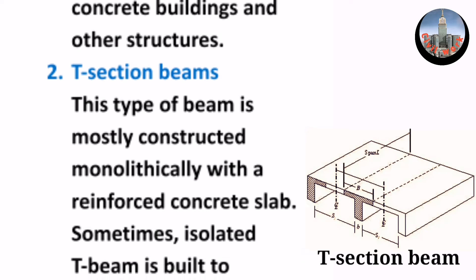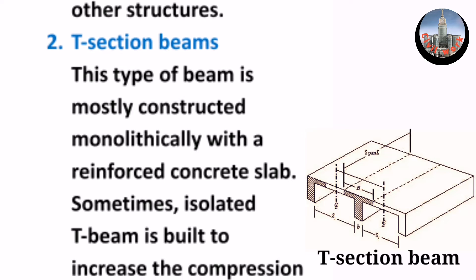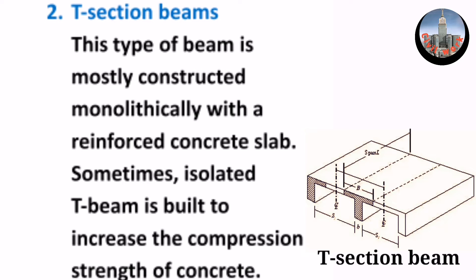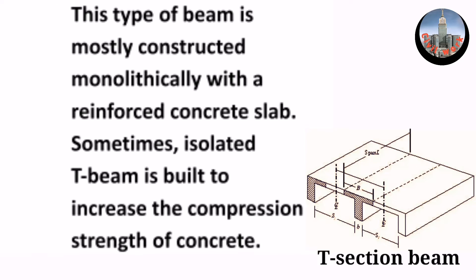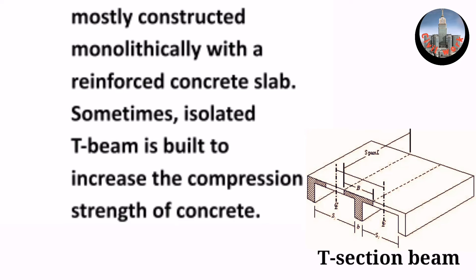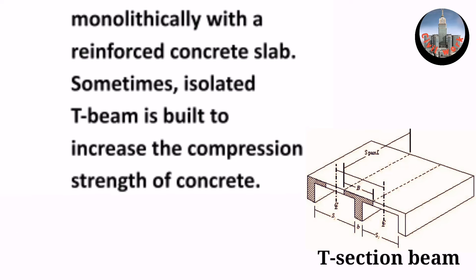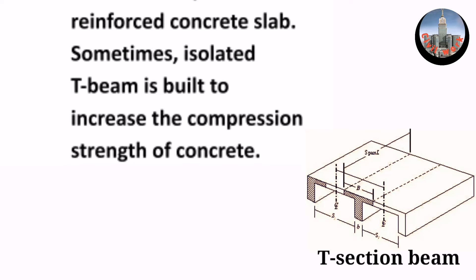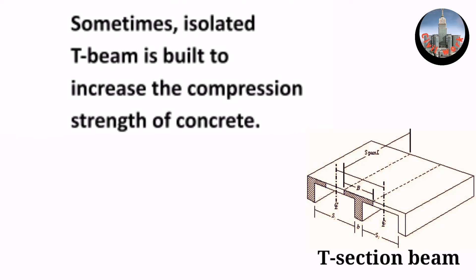2. T-section beams. This type of beam is mostly constructed monolithically with a reinforced concrete slab. Sometimes isolated T-beam is built to increase the compression strength of concrete.